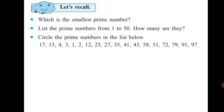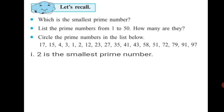You can answer these 3 questions there. First, which is the smallest prime number? 2 is the smallest prime number. List the prime numbers from 1 to 50 — how many are there? Prime numbers are those which are divisible by 1 and itself only; no other number can divide them. Such numbers from 1 to 50 are totally 15 in number.